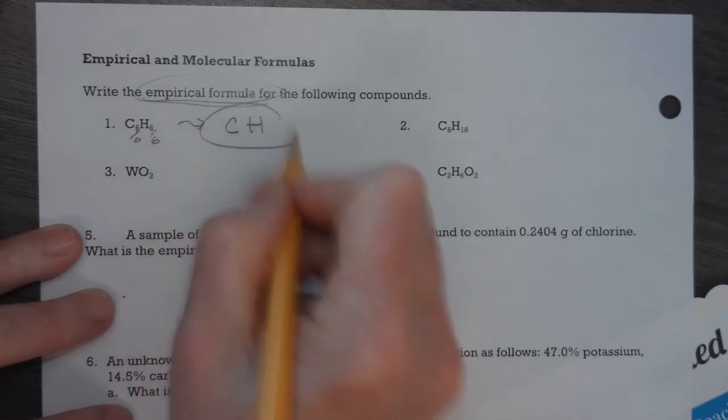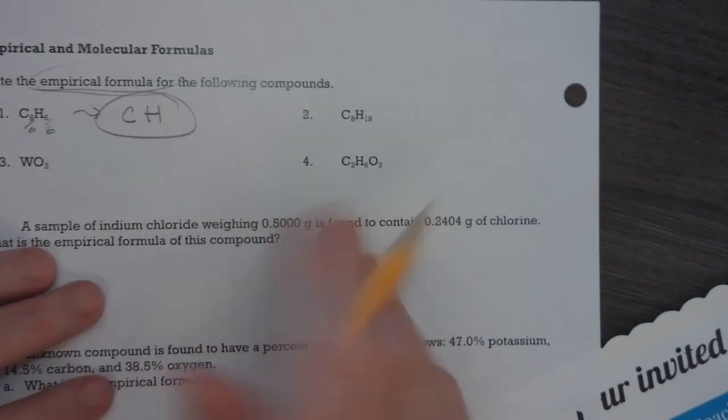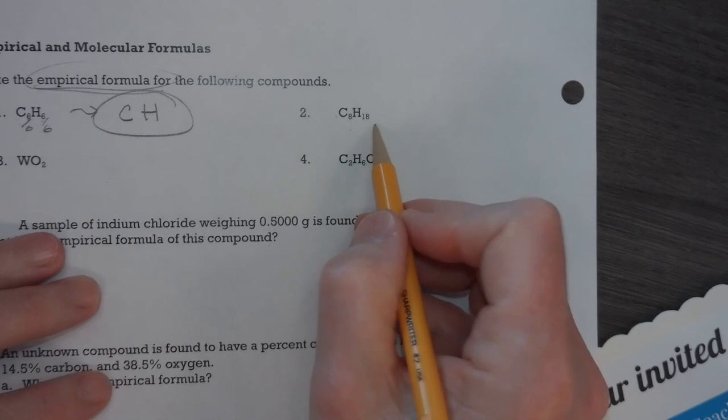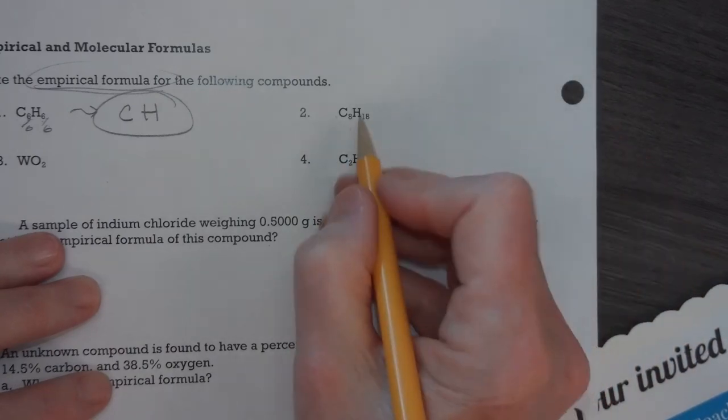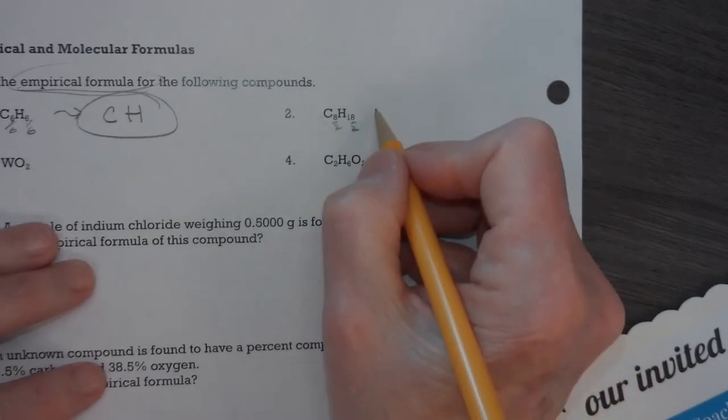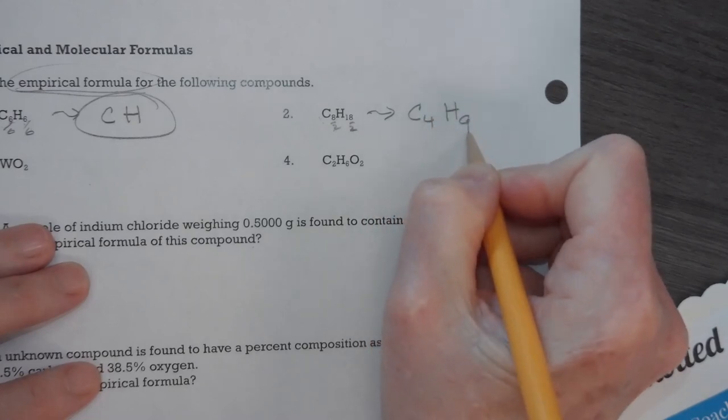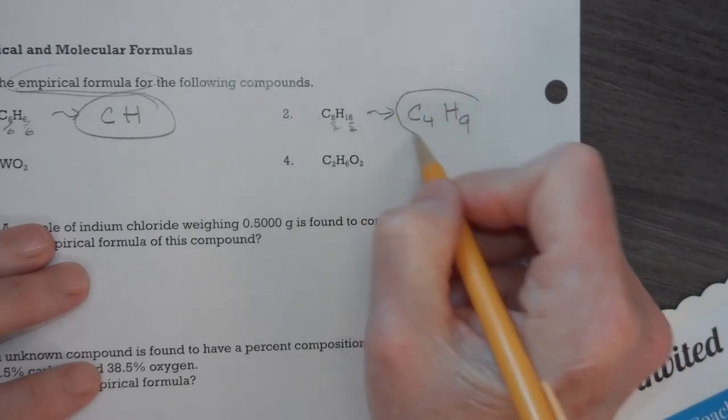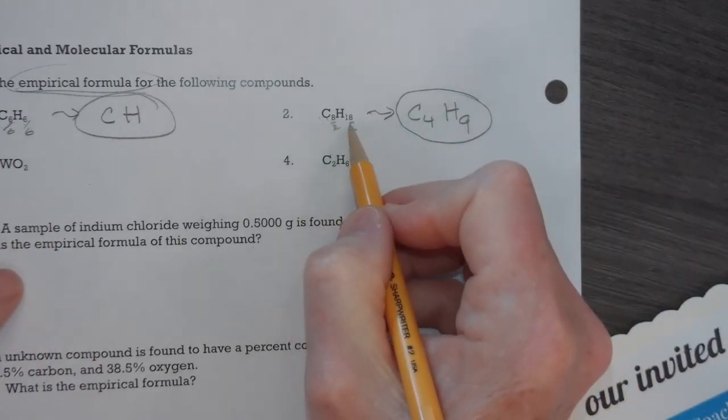And remember, when the subscript is 1, we don't write it. Now, for number 2, we have C8H18. The lowest common denominator is actually 2, so I'm just going to divide them each by 2, and I'm going to get C4H9. I can't simplify it anymore. That's the empirical formula for octane. Octane is C8H18.